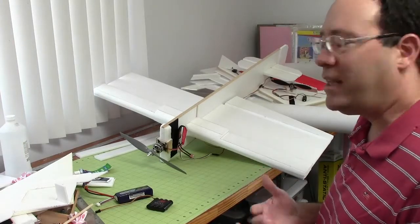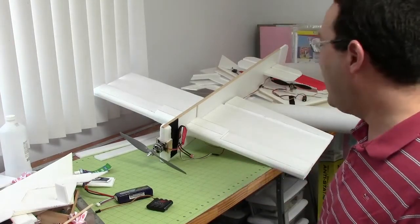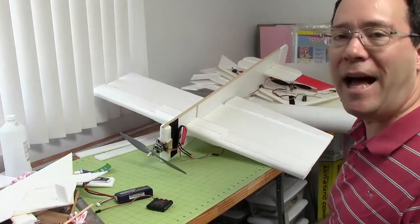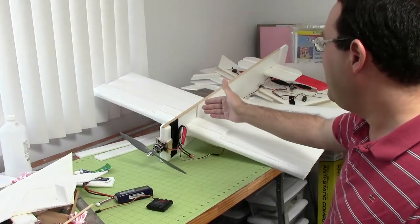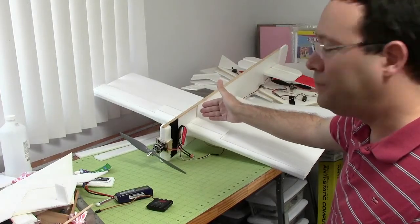And what I do is that I just take a guess. I just say okay, the wing is five inches back, or let's say the CG is going to be five inches back.